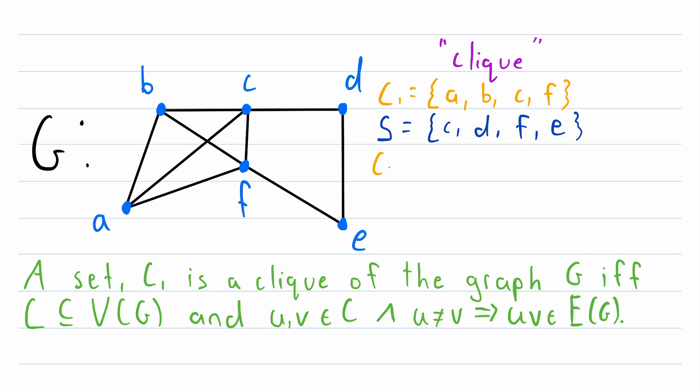For another example of a set that is a clique, let's call this C2. This set has the vertex B, the vertex C, and the vertex F. And we can see just by looking over here that every pair of these three vertices is adjacent. B and C are adjacent, B and F are adjacent, and C and F are adjacent. And there are a couple more cliques in this graph G as well. See if you can spot them. So that is what a clique is.